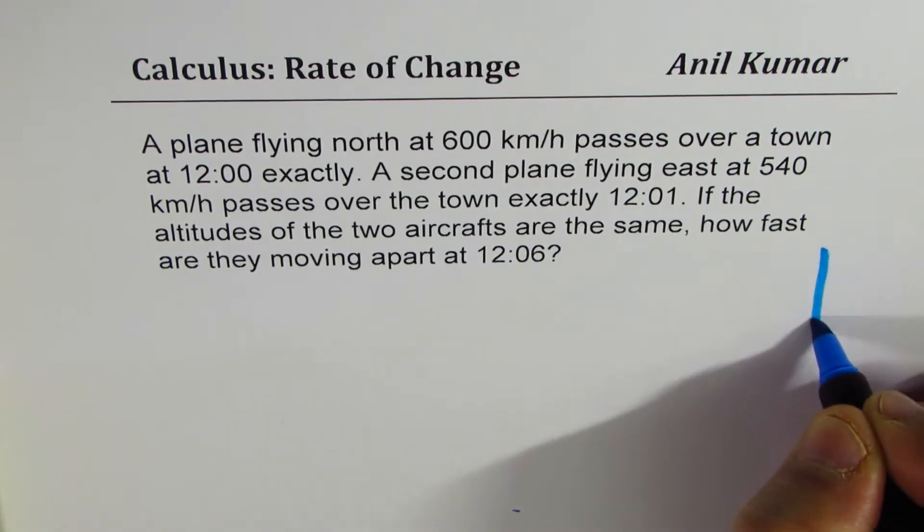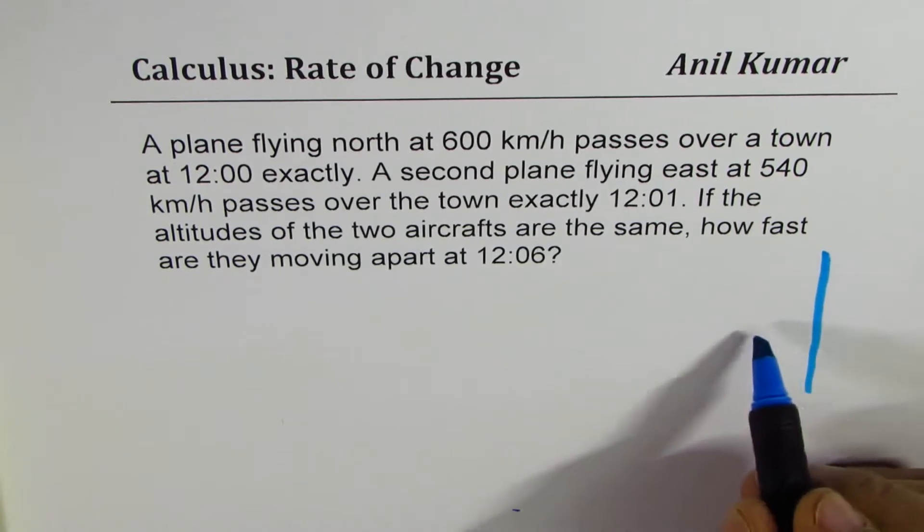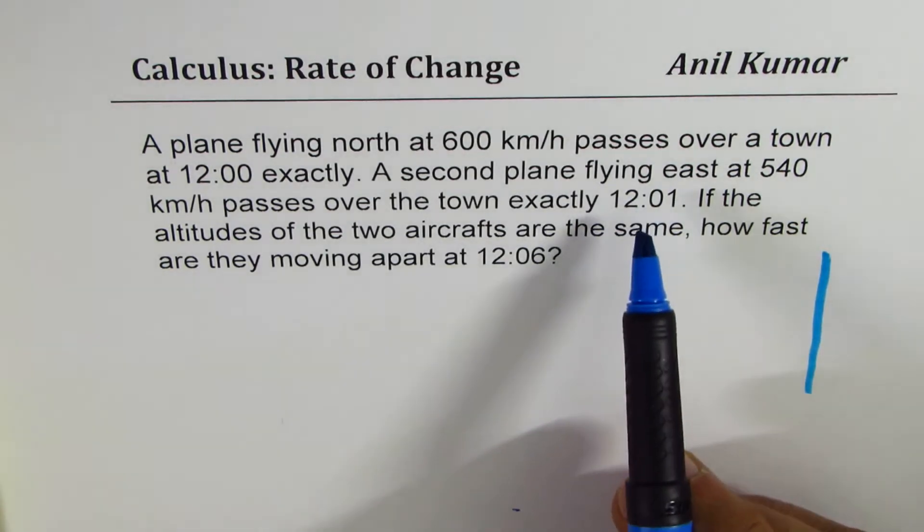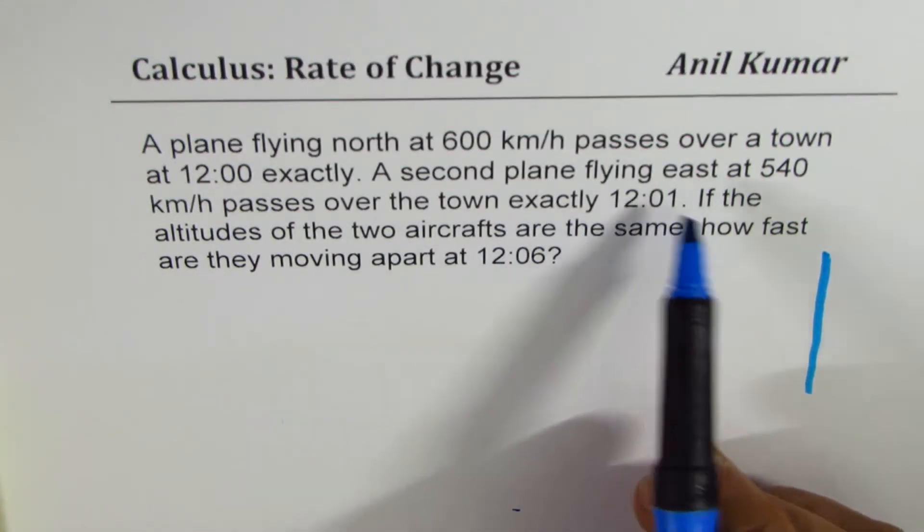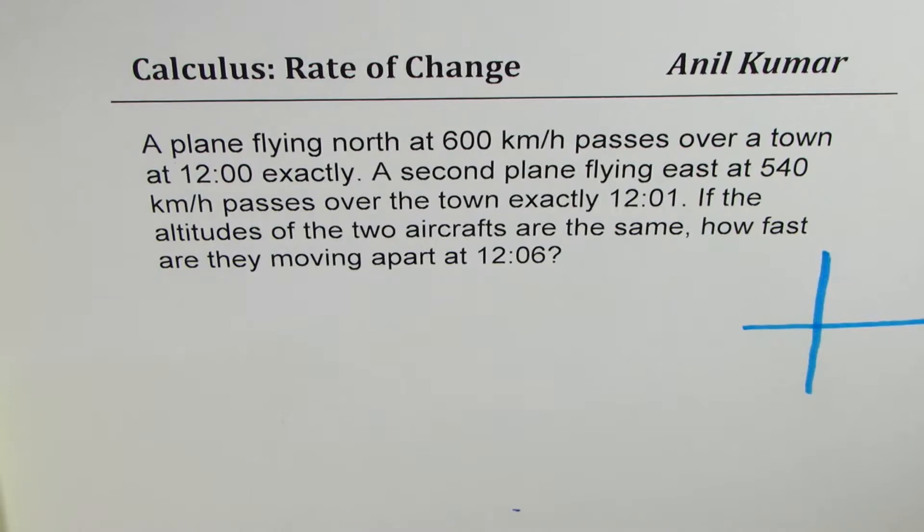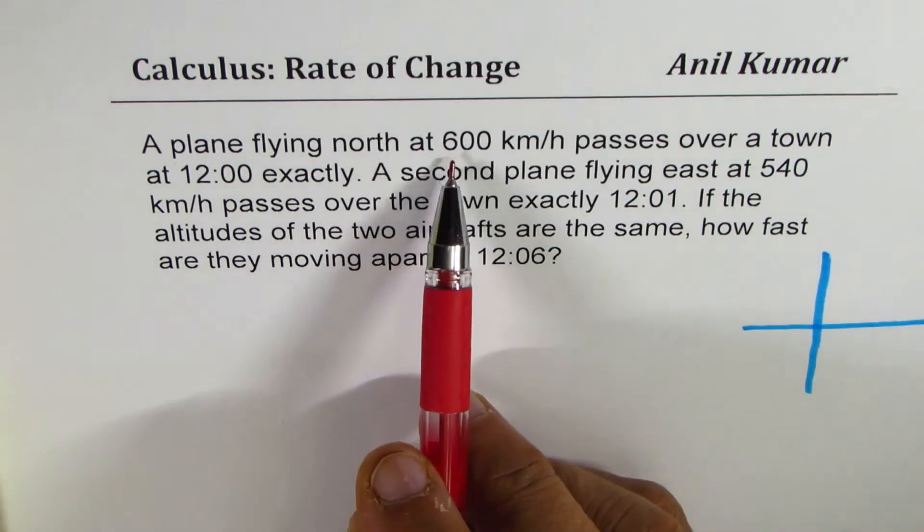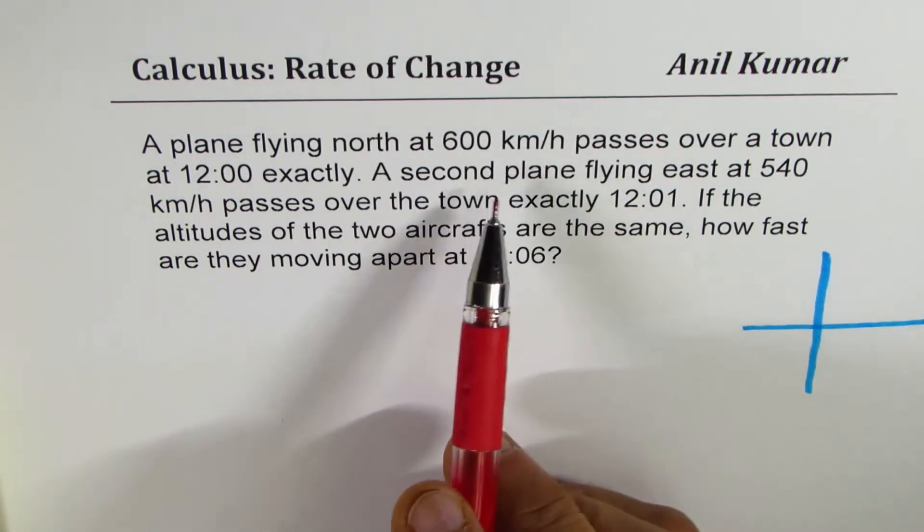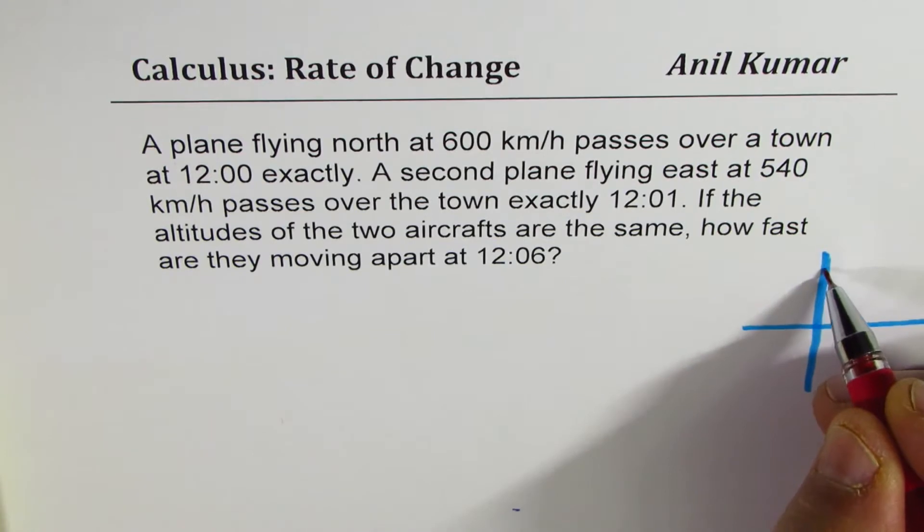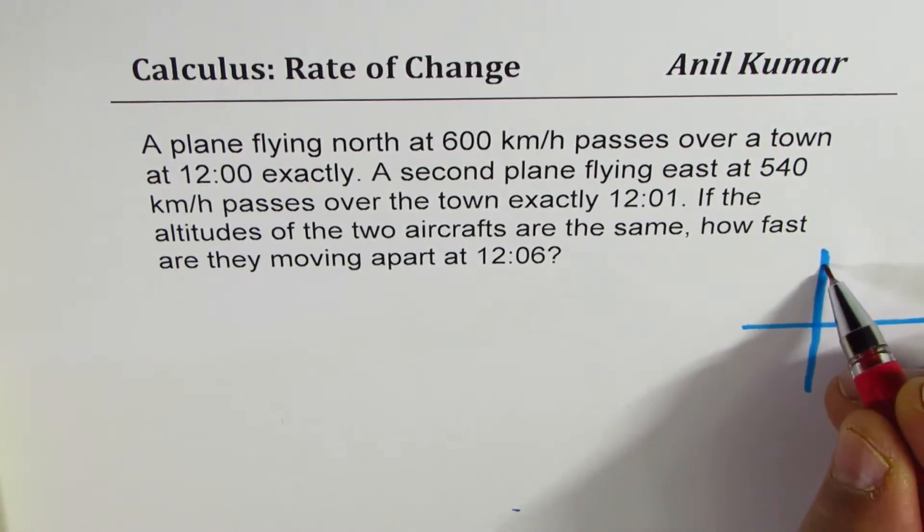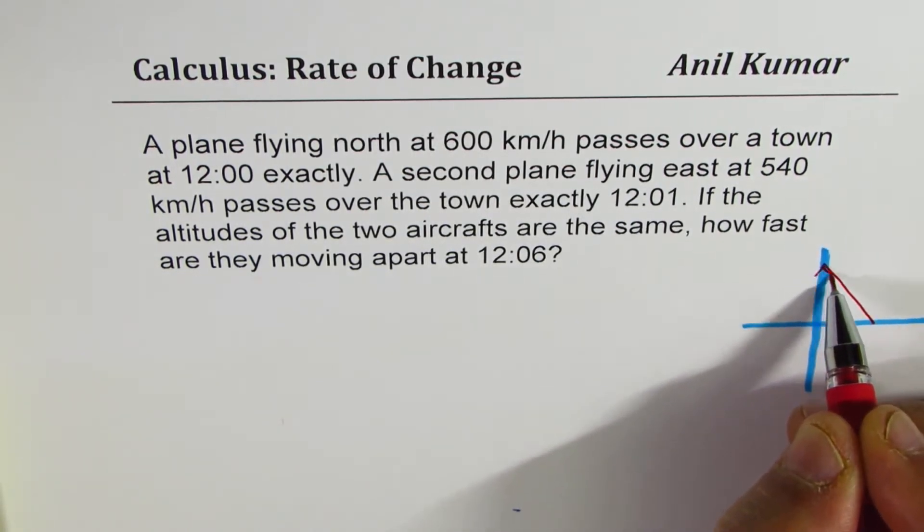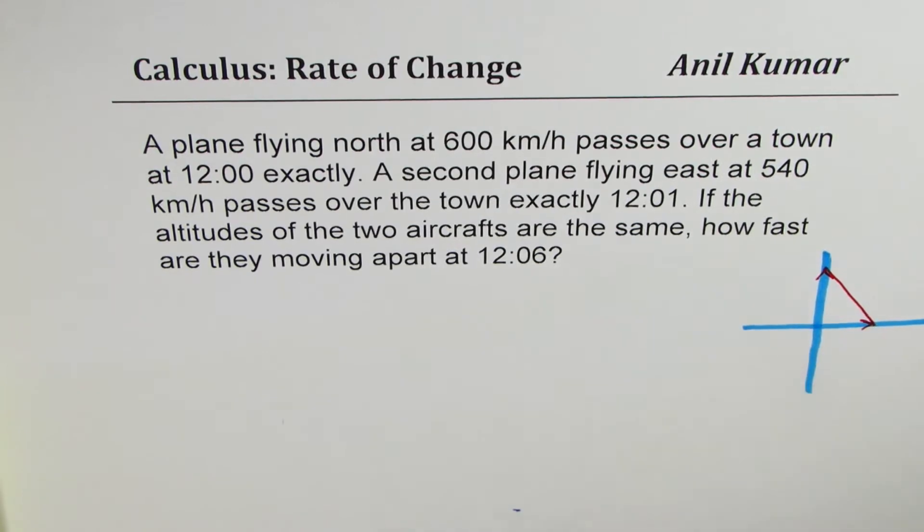As I insist, first step should always be to sketch the situation. So we are talking about two different planes which are flying in the direction of north and east, so let's try to sketch it here. We have a plane flying north at 600 kilometers per hour and the plane towards east is slightly lesser speed, 540. So let me keep this slightly more than that. Joining them will give us the distance between the two. This plane is moving in that direction and here we have a plane moving in this direction.